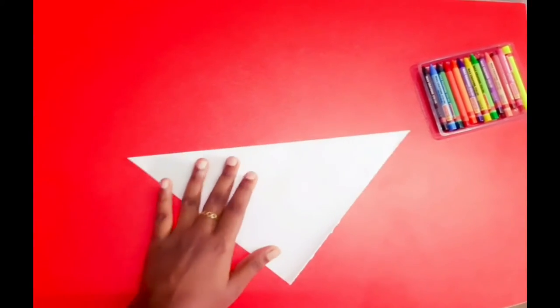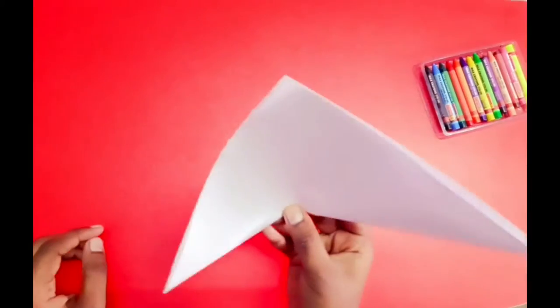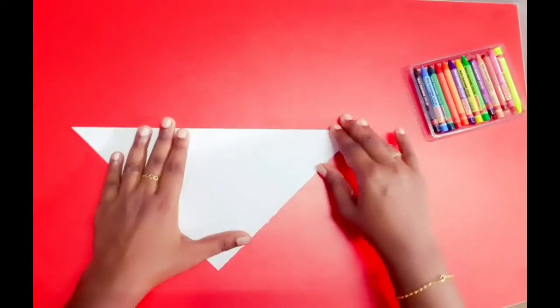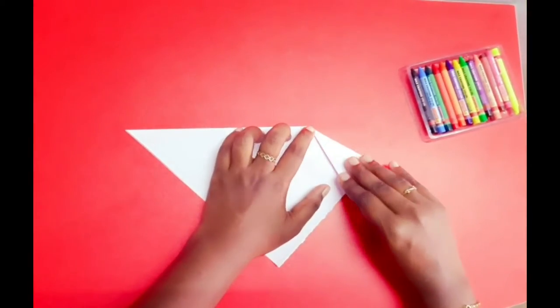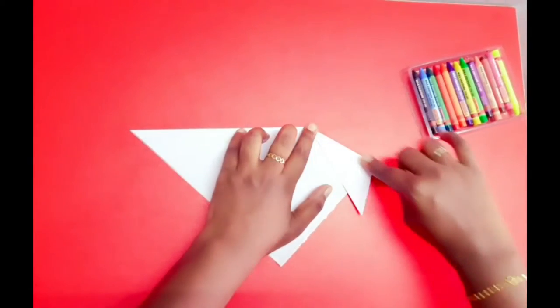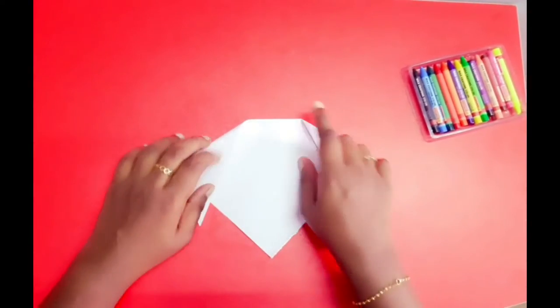Now it looks like a triangle. Now make ears for the dog like this and fold here also.